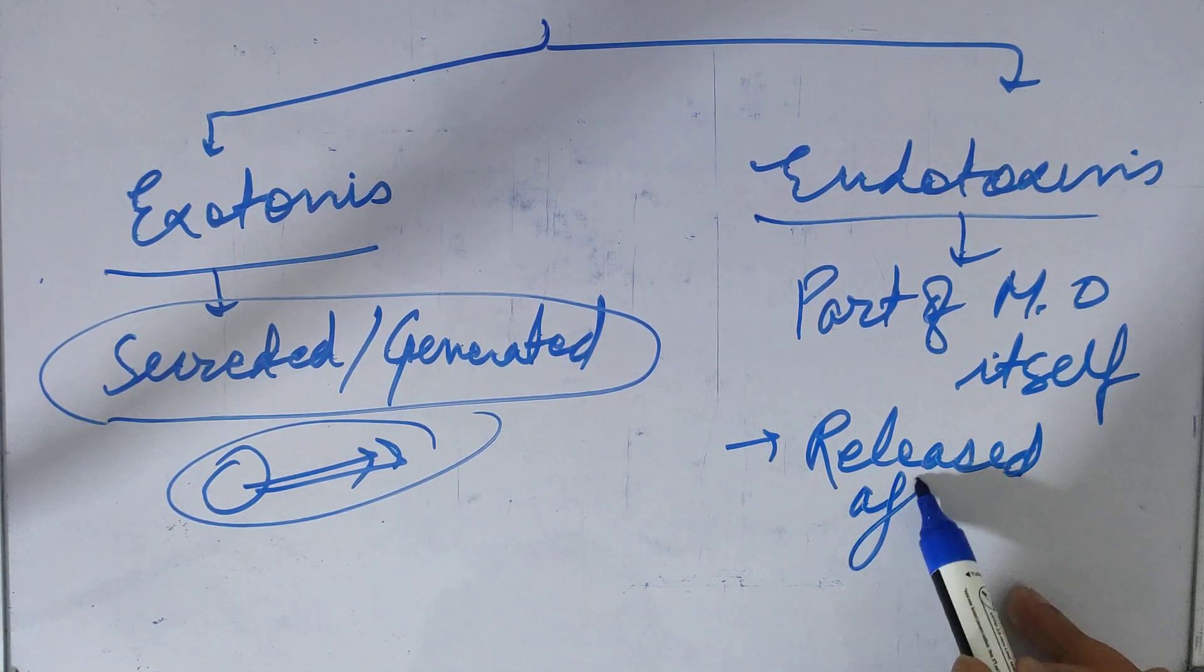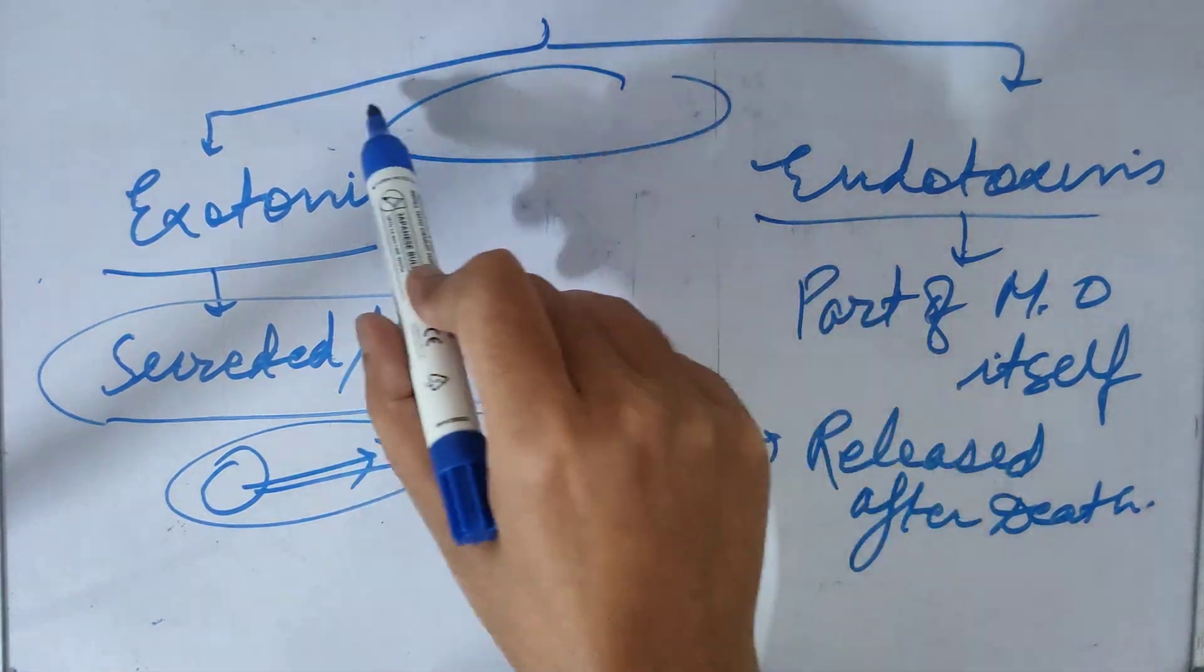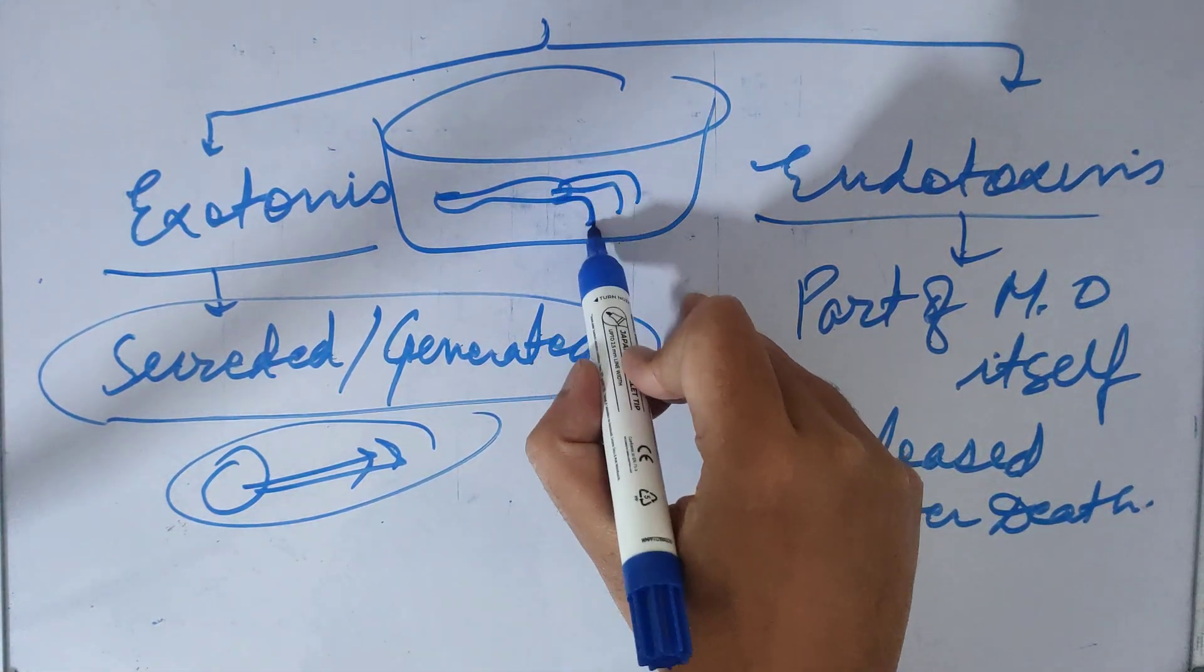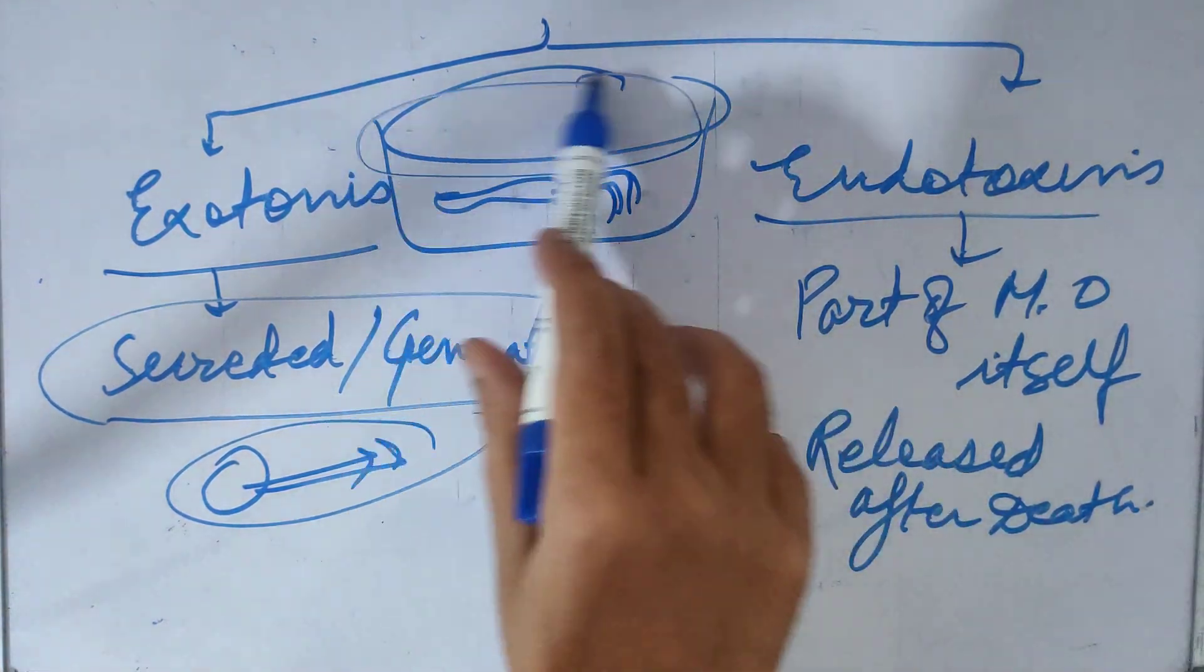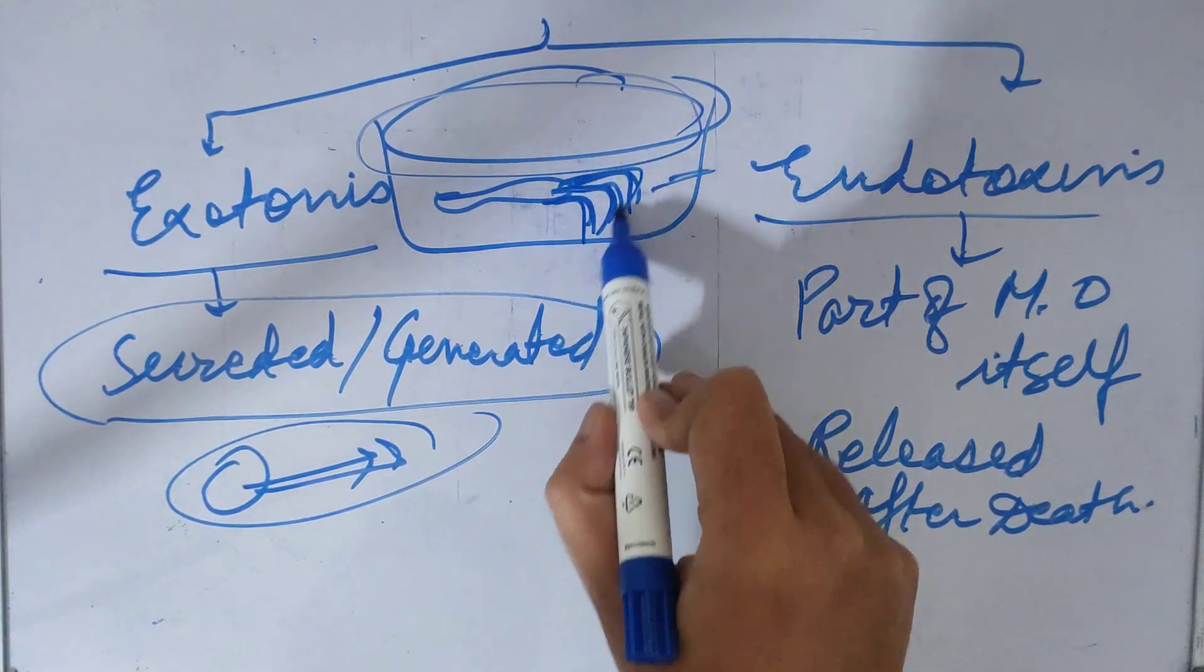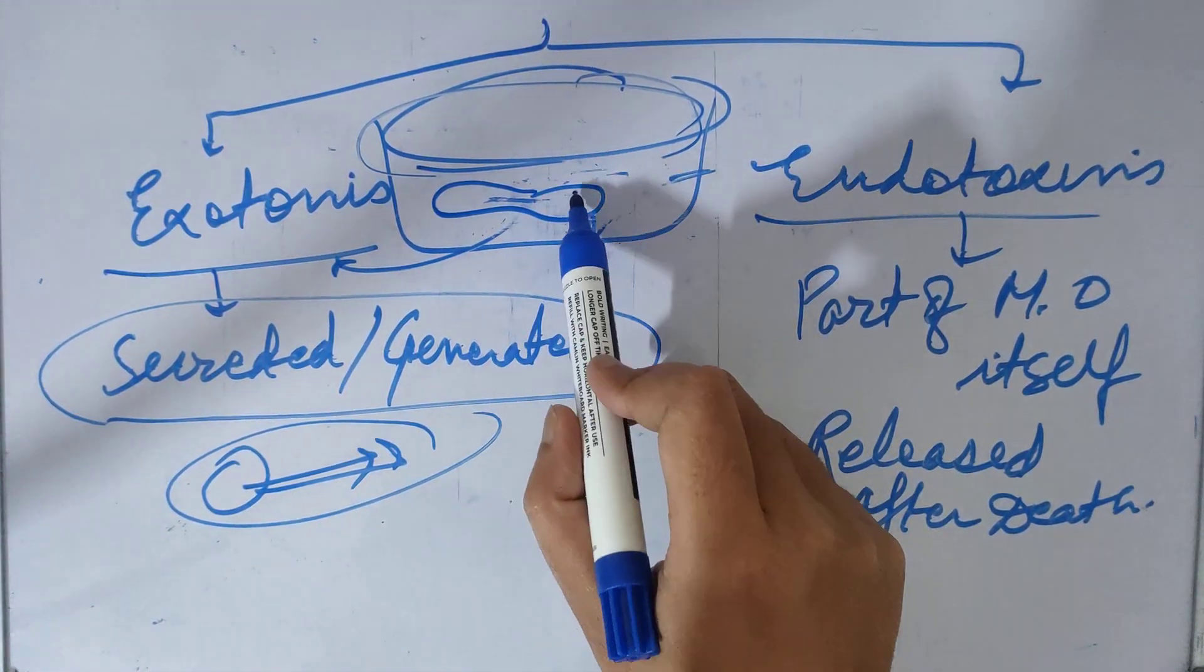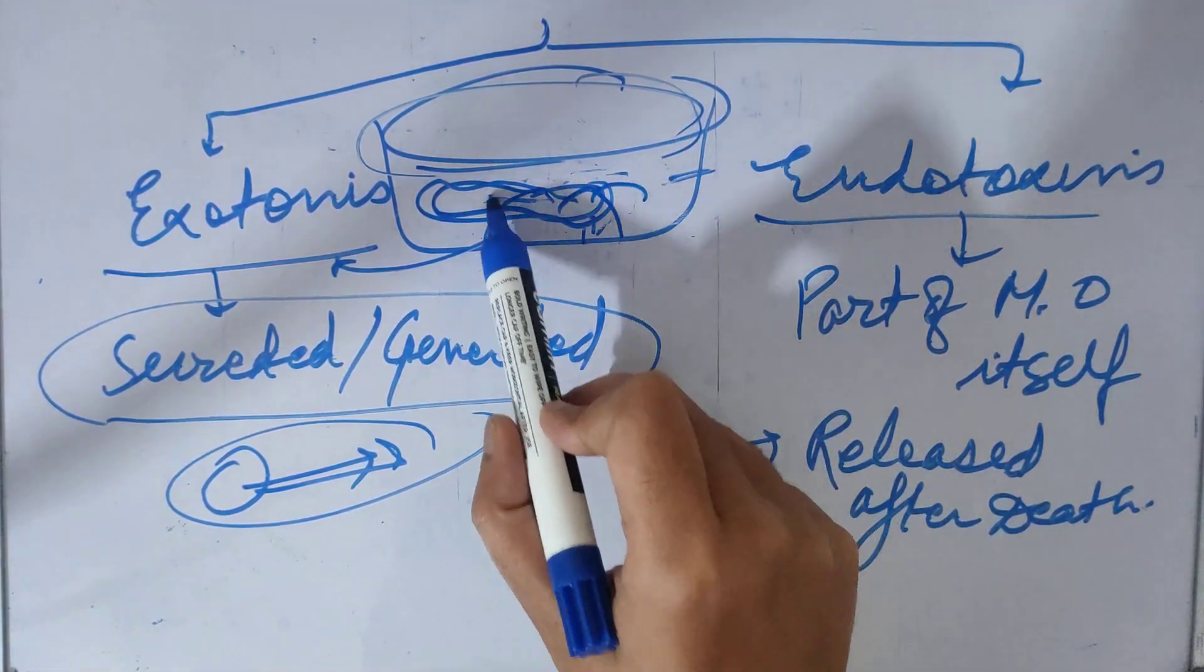There are exotoxins which are secreted. These toxins are released, they are secreted. This is exotoxins. In the second case, the bacteria dies and after it dies, the toxins are automatically released.